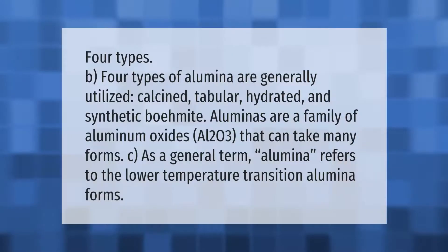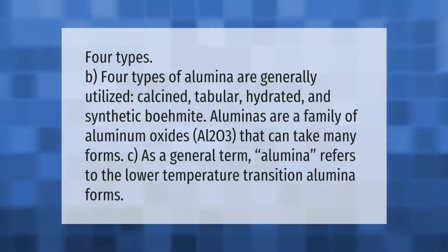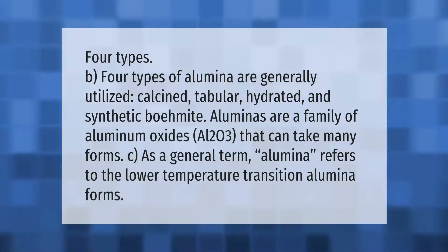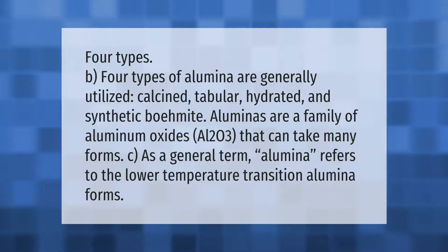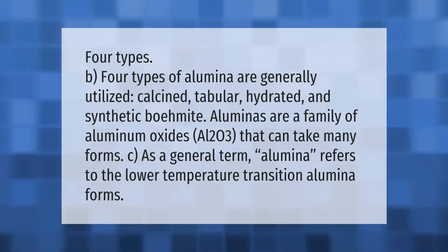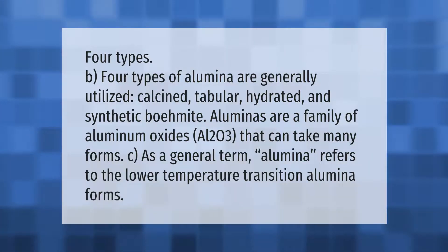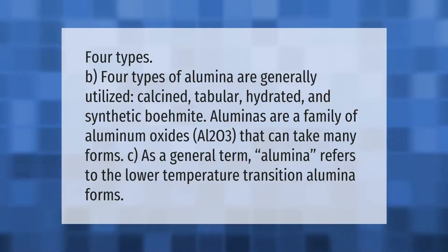Four types of alumina are generally utilized: calcined, tabular, hydrated, and synthetic bauxite. Aluminas are a family of aluminum oxides that can take many forms. As a general term, alumina refers to the lower temperature transition alumina forms.